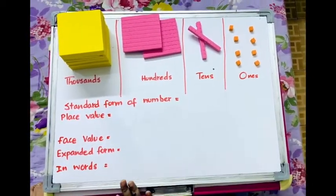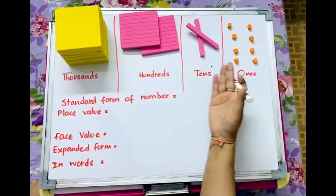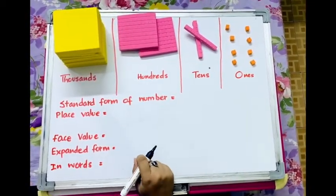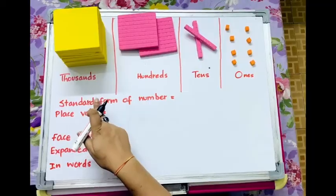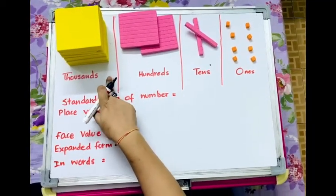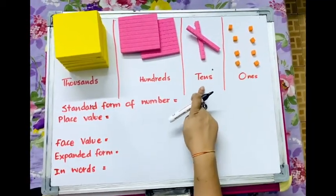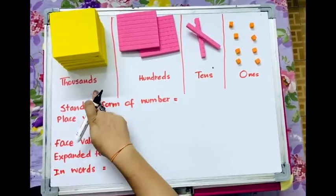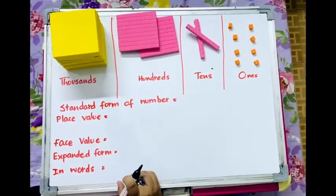Let's make it easy and interesting by using these Dean's blocks. Let us take this chart with different sections of ones, tens, hundreds and thousands to understand better.